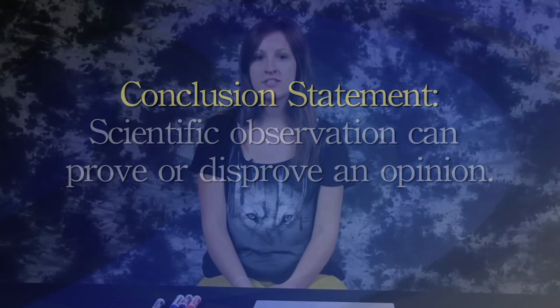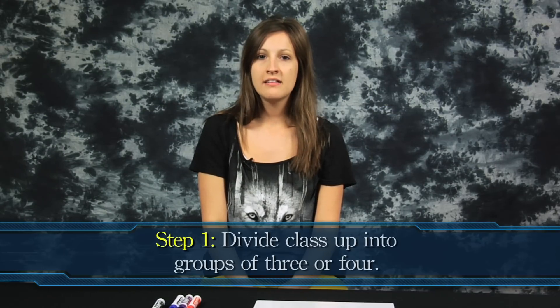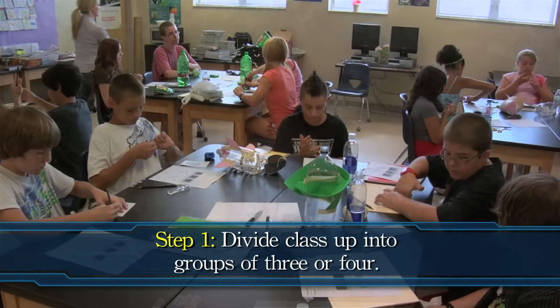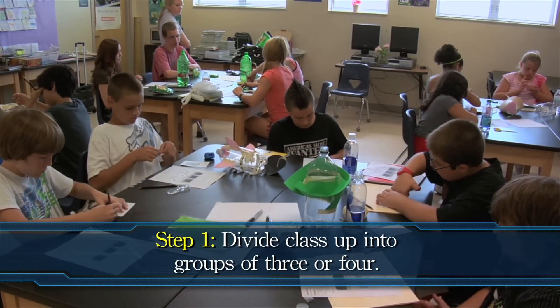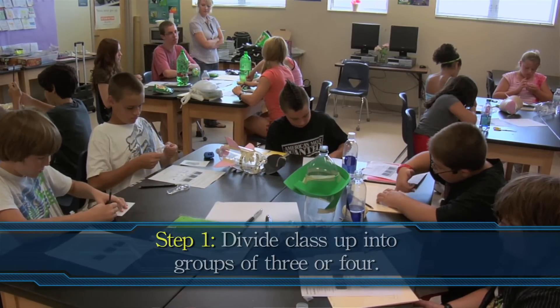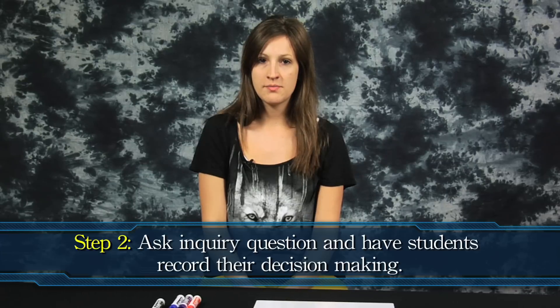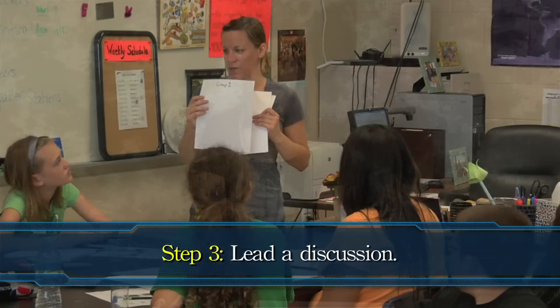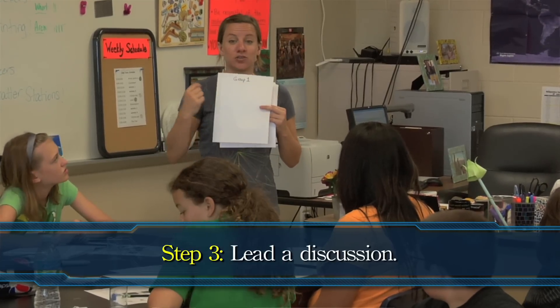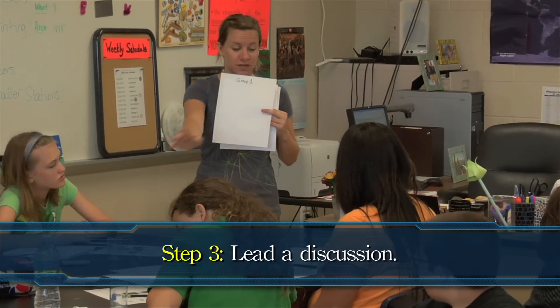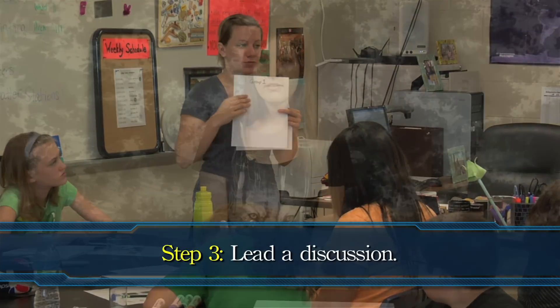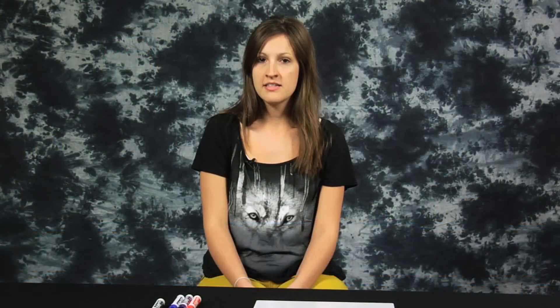Now on to the lab. Divide the class up into groups of three or four. Ask them the inquiry question and have them record some of the criteria they use to make their decisions. After ten minutes, lead a class discussion. Ask students to share their whiteboard writings and compare and contrast their sorting criteria. Hold a discussion explaining the difference between personal opinions and verified observations.